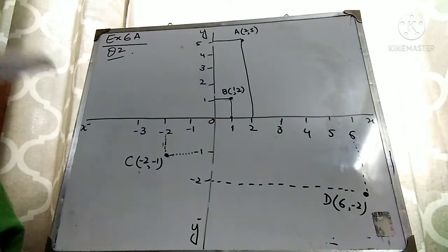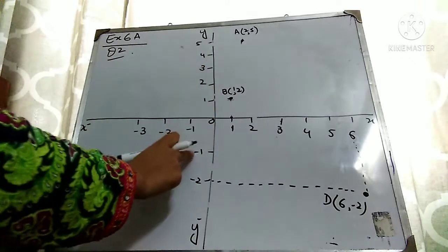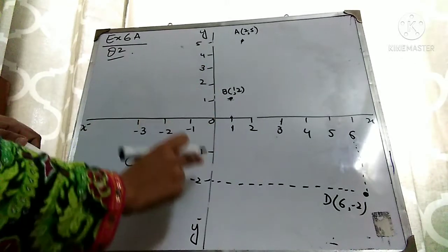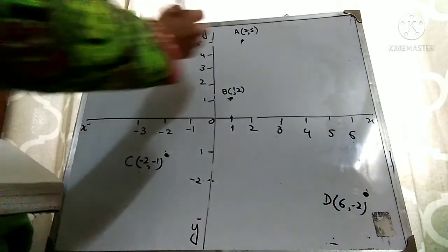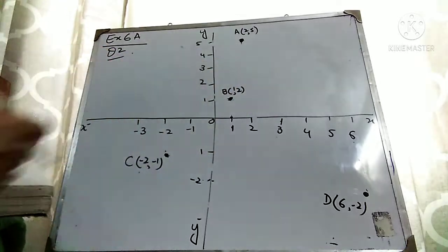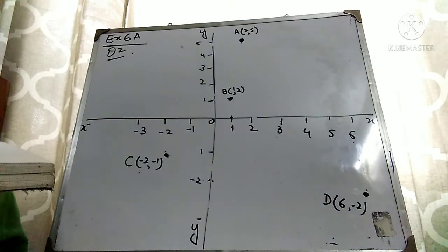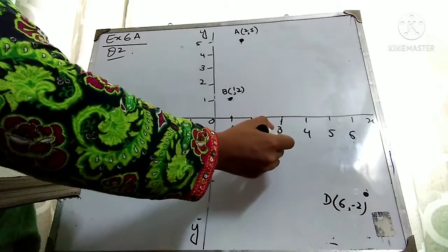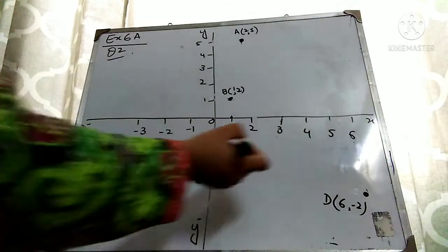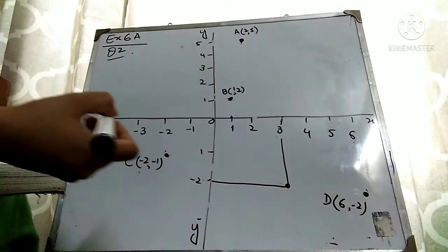It's not required to draw these construction lines — I drew them just to explain the concept. Now points A, B, C, and D are marked. Point E is at (3, -2). X is positive, so 3 is here. Drag it down because Y is negative. So (3, -2) — this is your point E.